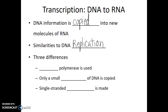However, there are some differences. In transcription, since we're making RNA, a different enzyme is used — RNA polymerase — to make these new molecules of RNA. Also, only a small portion of the DNA is copied during transcription — only one gene, instead of the entire chromosome as in DNA replication. The final product of transcription is single-stranded RNA. The DNA started as double-stranded and will still be there as a double-stranded molecule after transcription. In contrast, DNA replication starts with one double-stranded molecule and ends with two.